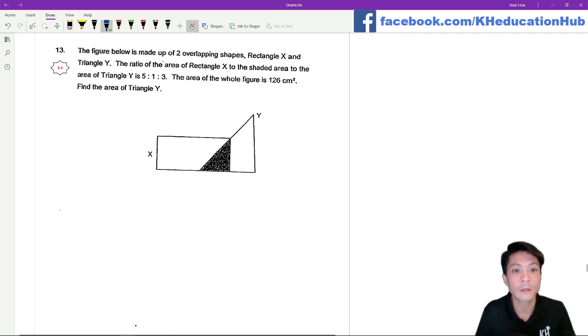Going to question 13. The figure below is made up of two overlapping shapes, Rectangle X and triangle Y. The ratio of the area of rectangle X to the shaded area to the area of triangle Y is 5:1:3. The area of the whole figure is 126 square cm. They want you to find the area of triangle Y, which is over here.